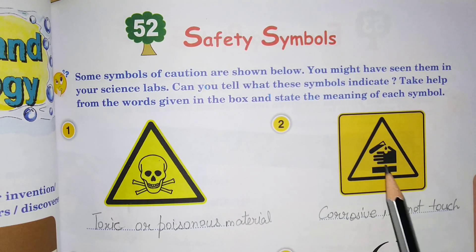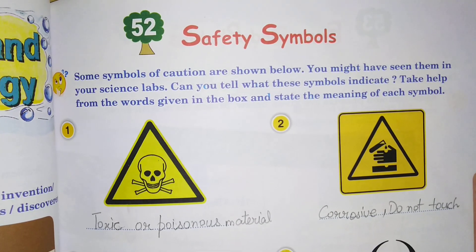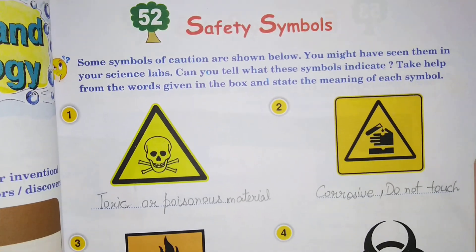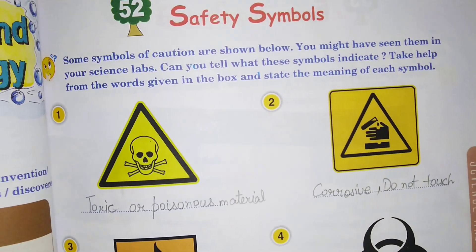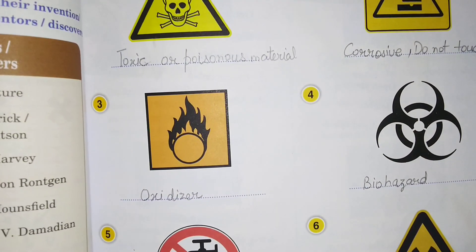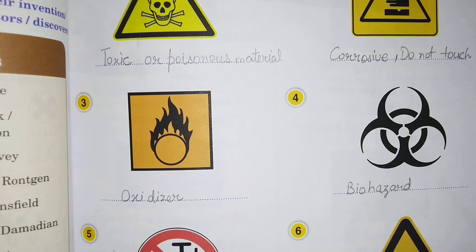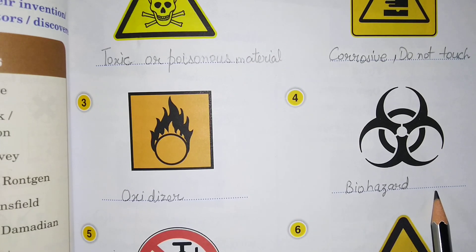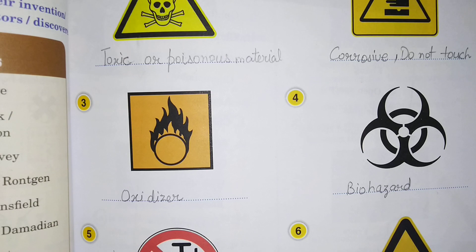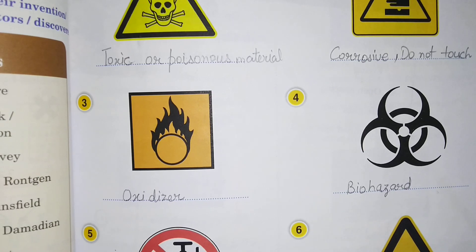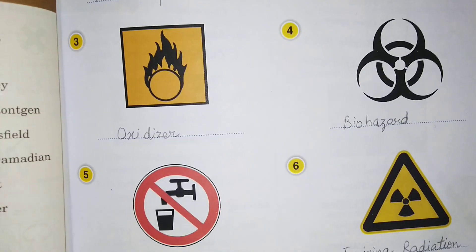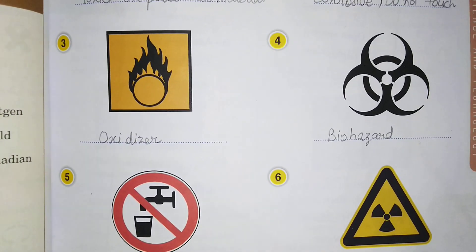Iska matlab hota hai corrosive, do not touch, aap isko touch nahi karenge. Next is oxidizer, jis se fire cost ho sakti hai. Yeh hota hai biohazard, matlab biological koi process chal raha hai, usmein agar yahan pe koi bhi symbol hai toh aap usko touch nai karegi, yeh aapke liye harmful ho sakti hai.